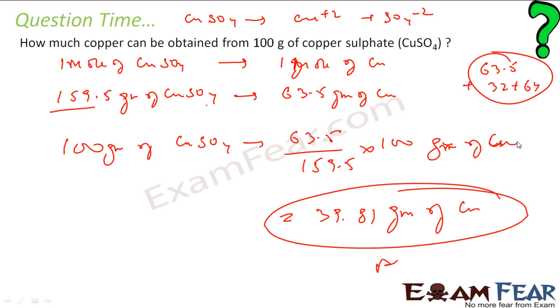Very easy. Just from the equation, 1 mole of copper sulphate gives 1 mole of copper. One mole of copper sulphate is 159.5 grams, and 1 mole of copper is 63.5 grams. Using that ratio, we find the answer.